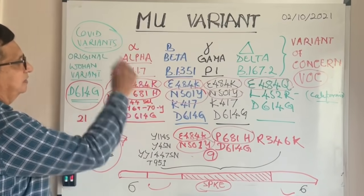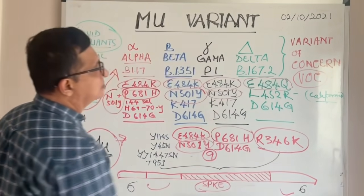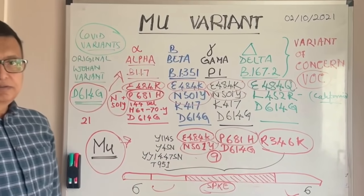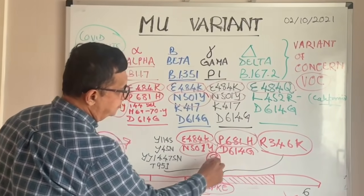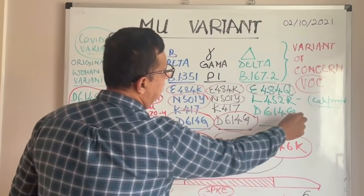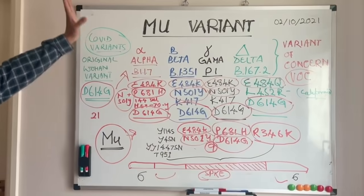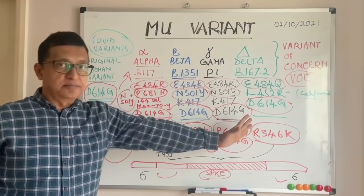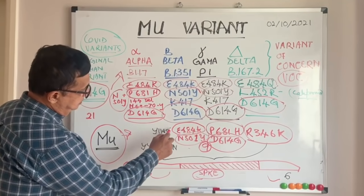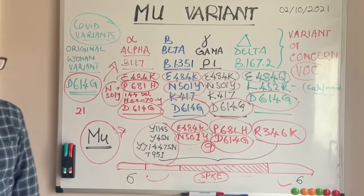Mu also carries P681H, which the Alpha variant had. It also has R346, which none of the variants of concern had — that is a distinct mutation. D614G, carried by all variants of concern, is also present in mu. So when we consider these four shared mutations, mu has all of them, plus four additional new mutations in the spike protein.